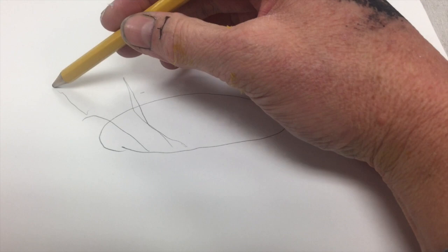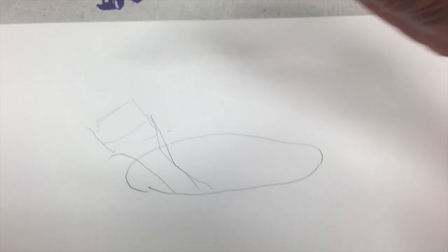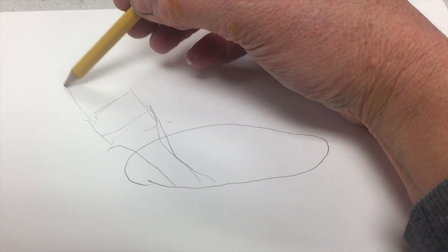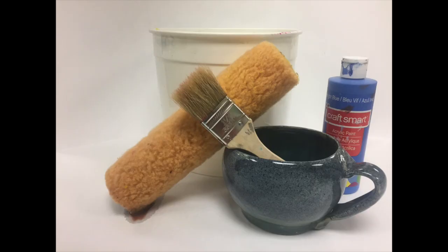I may have to go back in later. I'm doing this darker than you guys should. You guys should do your initial blocking in shapes nice and light with the H pencil so that you can go back in later and erase.